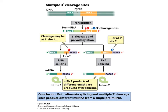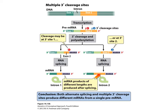Multiple 3' cleavage sites — we can see that within one primary transcript we have two different places where we could do 3' cleavage. If we do 3' cleavage at site number one, polyadenylate, and then splice, we have a small mRNA with only part of exon 2. Here's a big exon 2 — we cut off that whole part; what's left is just a portion.